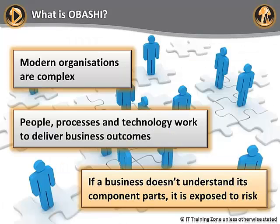The modern business is a complex organization. People, technology, and processes work together to generate revenue and deliver business outcomes. Many businesses do not have a full picture of how all their component parts fit together. This creates risk and can lead to real problems. Does your organization understand how its component parts all link together? What happens if a server fails or a network link goes down?